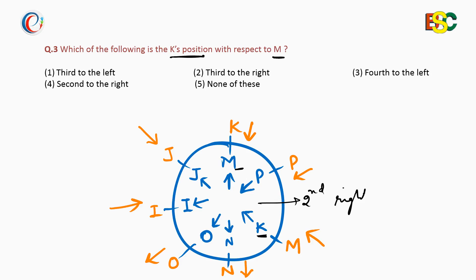The case drawn outside the circle also shows K is second to the right of M. So in both cases it is second to the right — that is, option 4 is the correct answer to this question.